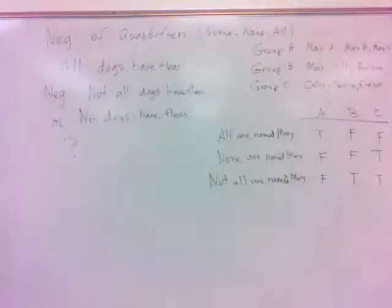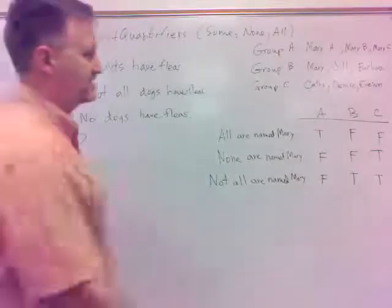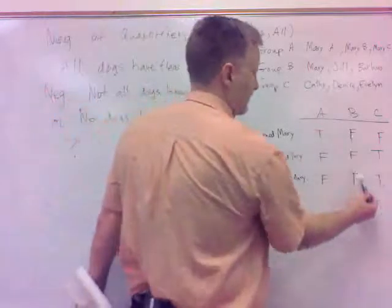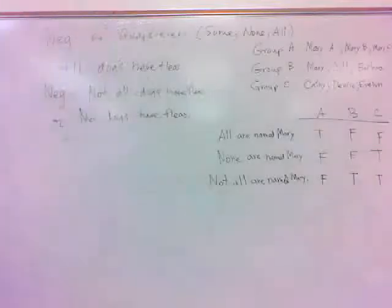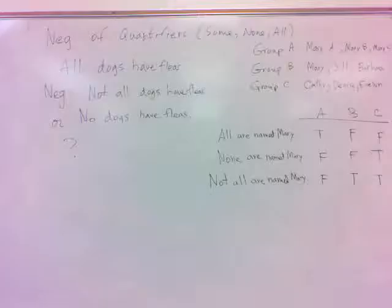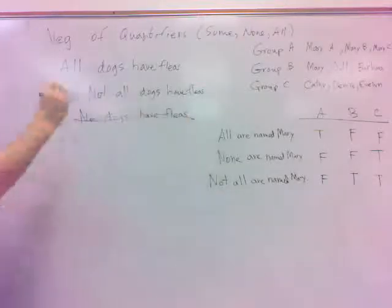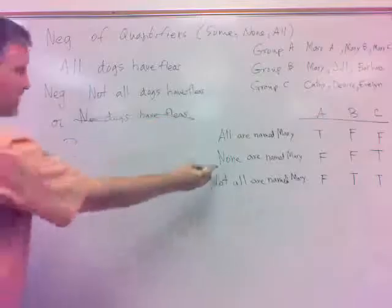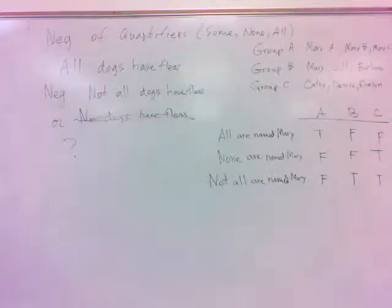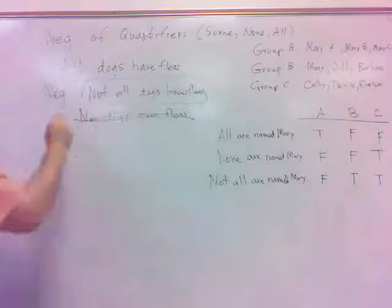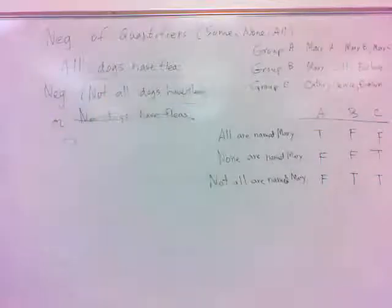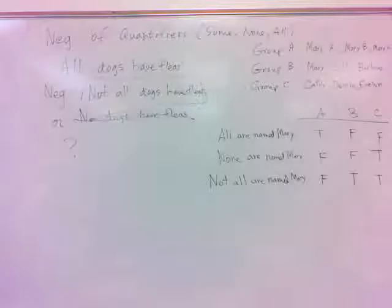It has to be opposite for each column in that order. You do 'all,' then 'none,' then 'not all.' Back to our original problem: 'no' or 'none' does not negate 'all.' 'Not all' does negate. So to negate 'all,' just put the word 'not' in front. Best thing to do.